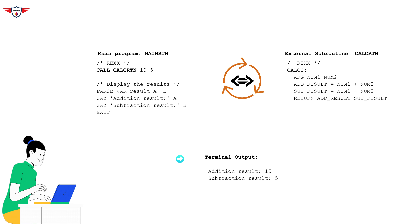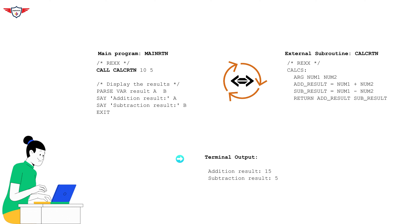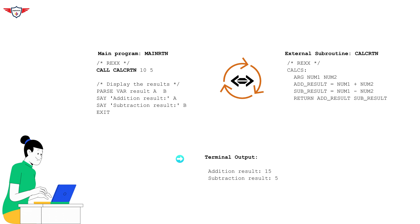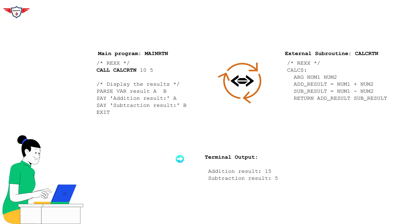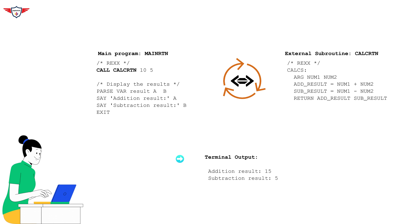Let's look at our example to understand how the main program interacts with an external program. In this case, we have main_routine, which is the main program, and calc_routine, which is the external program. In the main program, we have used the call statement followed by the external subroutine name, and after that we specify the arguments being passed to the external subroutine. Passing arguments is optional. In this case, because we are performing a calculation on two numbers — 10 and 5 — we have passed those two numbers along with the external subroutine name as arguments.